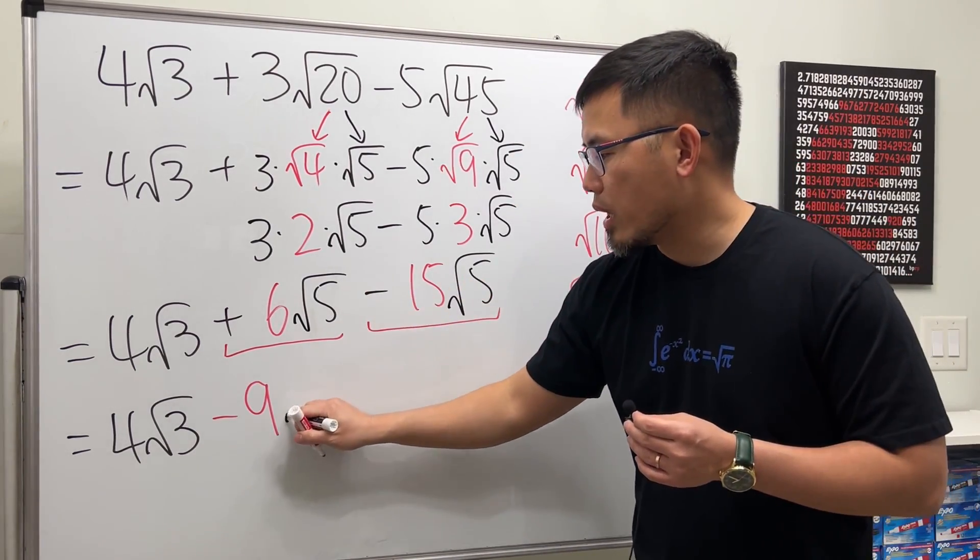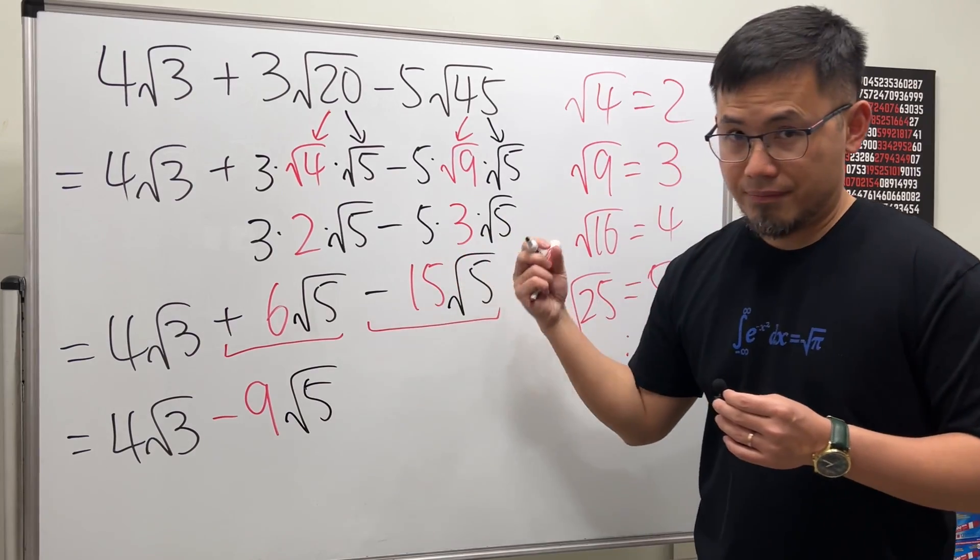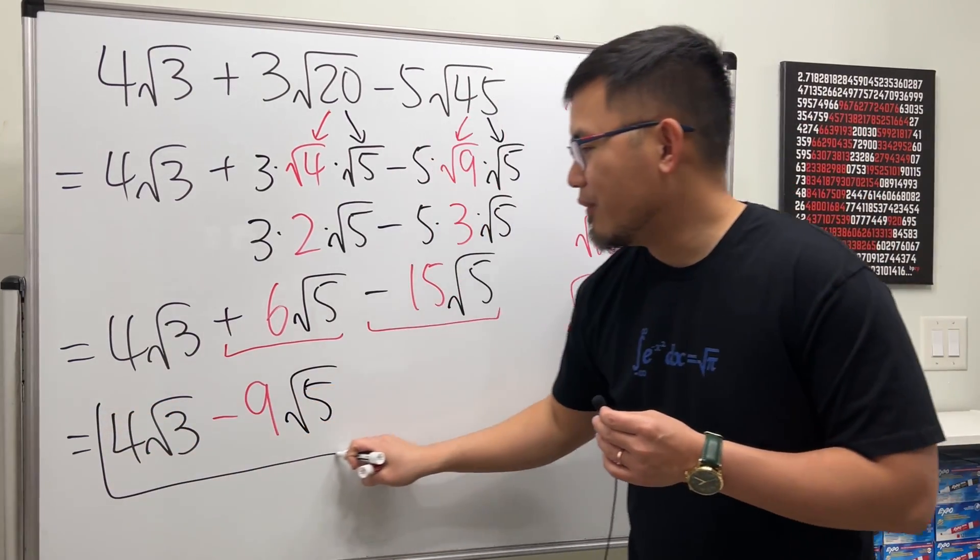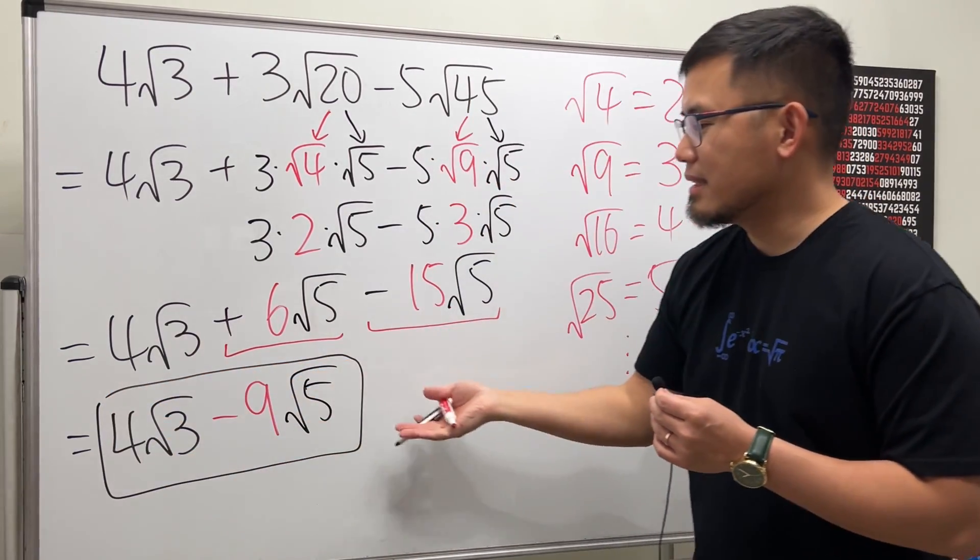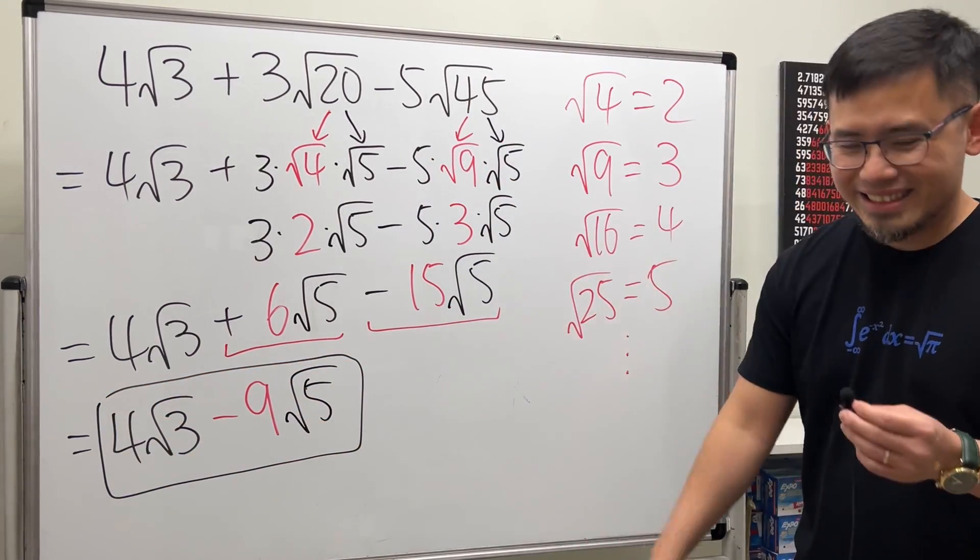And then we keep the √5. That's it. Final answer: 4√3 minus 9√5.